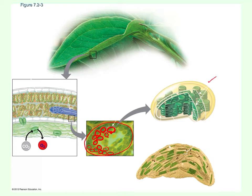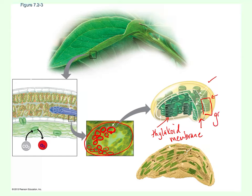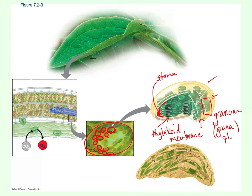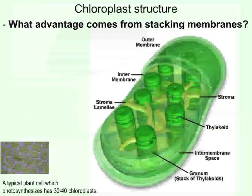The chloroplast is a double membrane structure — we have an outer membrane and an inner membrane. Inside the chloroplast we have green discs; each green disc is called a thylakoid membrane, and they are stacked. Each stacked unit is called a granum — you might see the word grana, which is plural for many grana. The thick, viscous liquid you find in between the thylakoids is called the stroma.